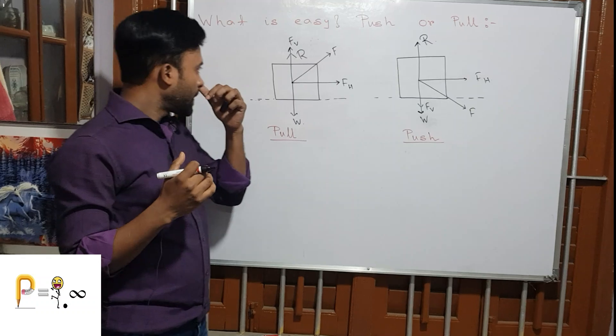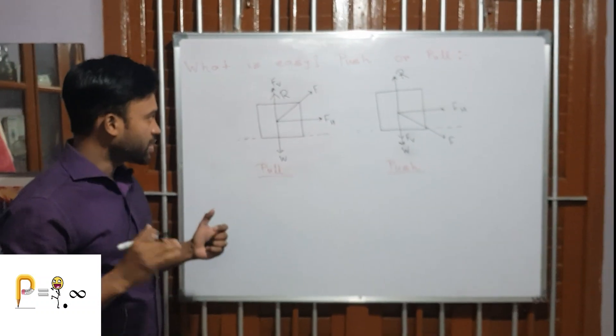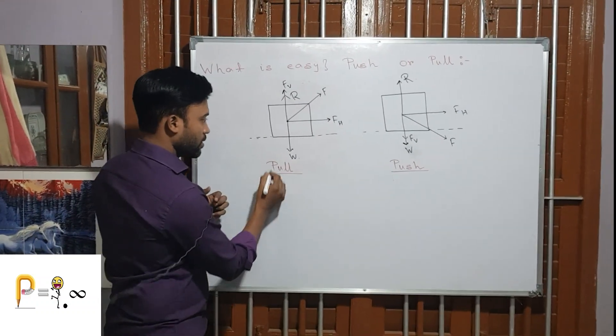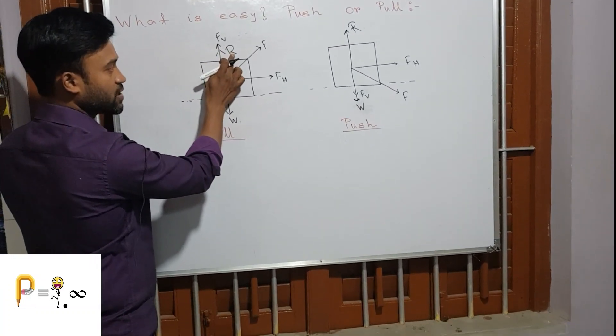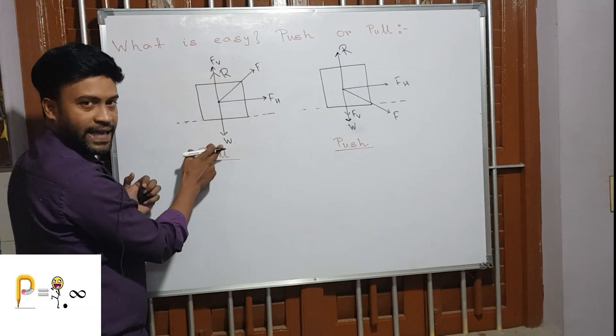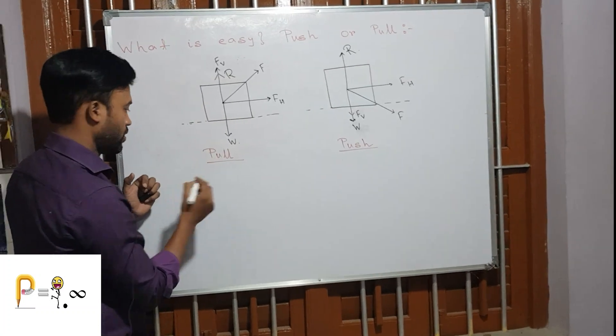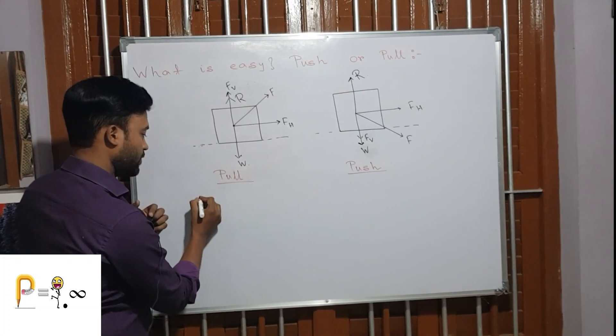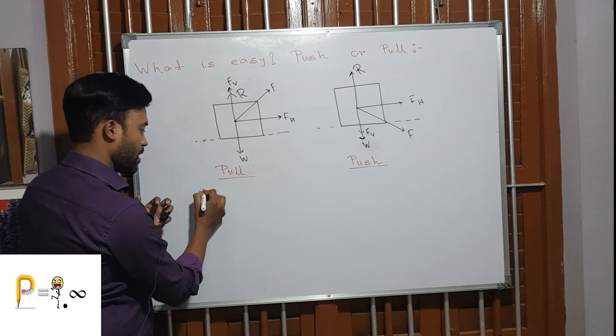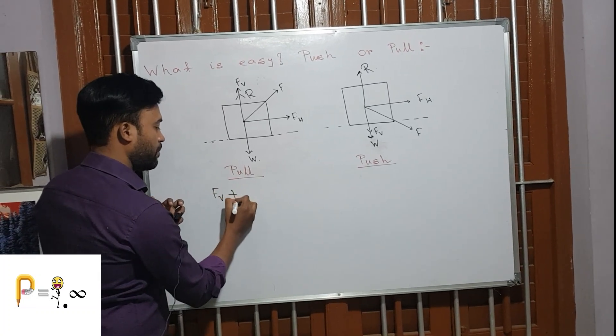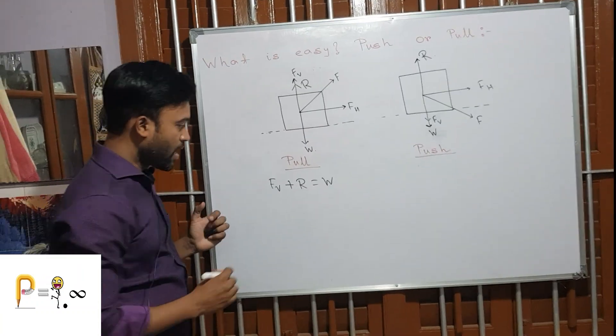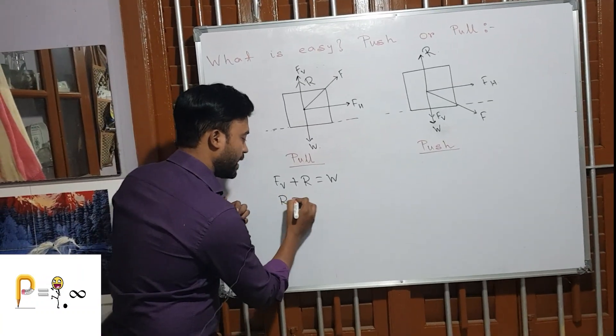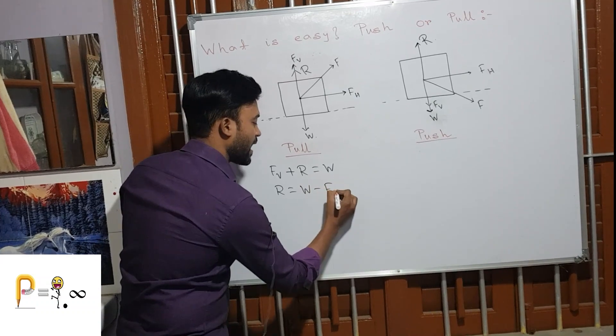For equilibrium condition, considering the vertical force and reaction force acting up and the weight acting down, the equation will be Fv + R = W, and therefore R = W - Fv.